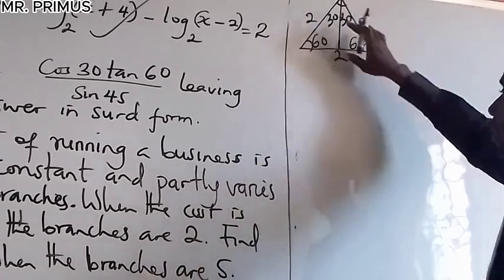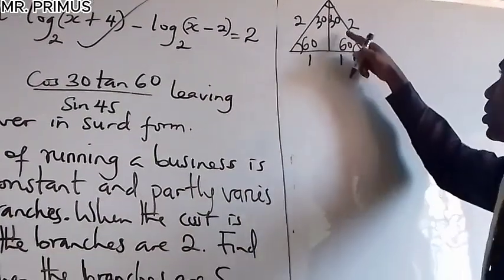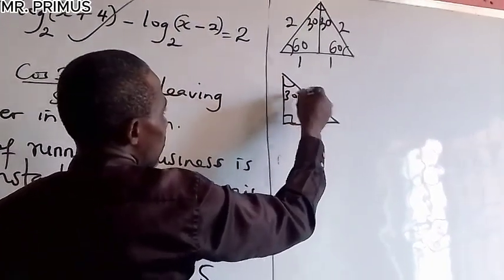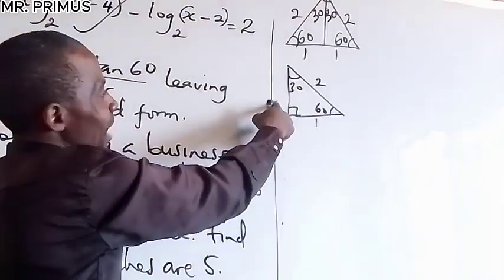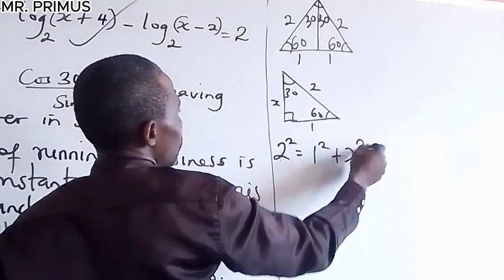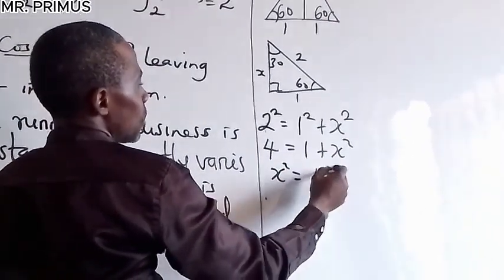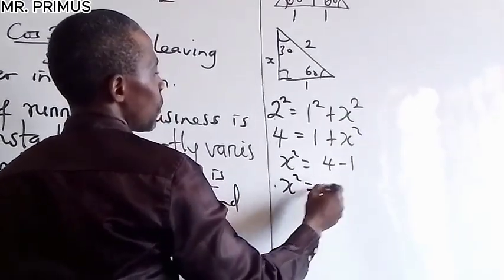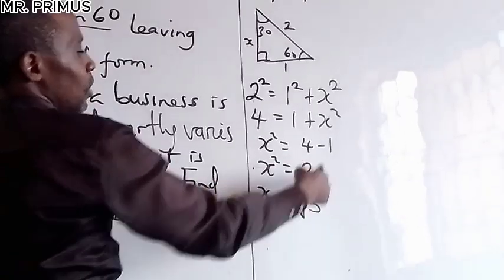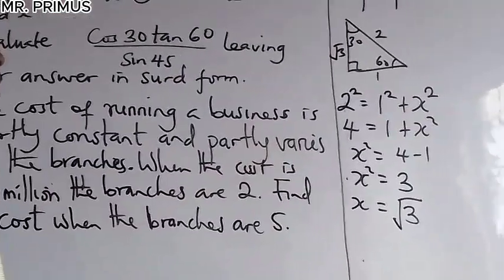After dividing, the base becomes 1 and the hypotenuse remains 2. We need the remaining side, so we apply Pythagoras: 2² = 1² + x², giving 4 = 1 + x², so x² = 3, and x = √3. This gives us the 30-60-90 triangle with sides 1, √3, and 2.